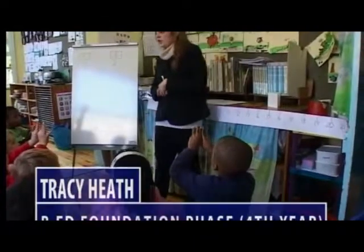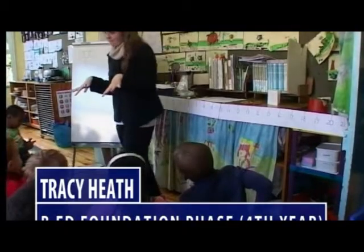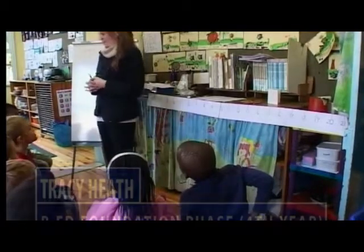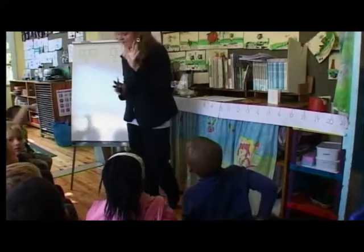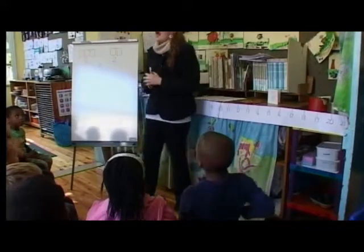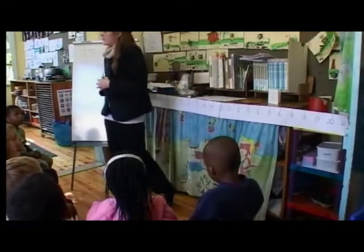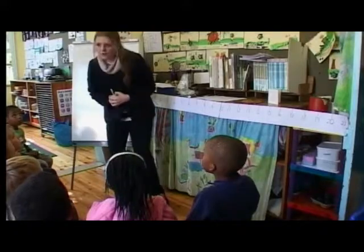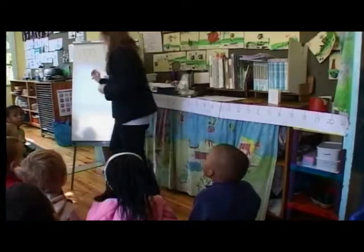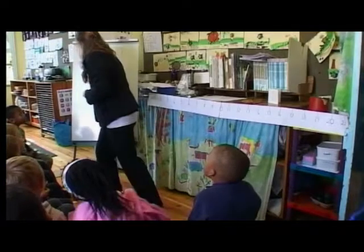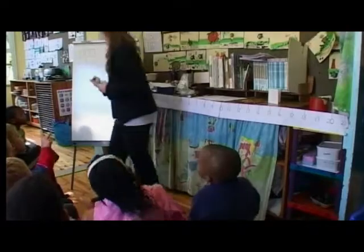Tracy Heath is modeling learner strategies for solving a subtraction problem. She tells a story: 'I have a friend, her name is Jane, and Jane loves apples. She has five apples. And her brother Thomas decides to eat two of her apples. So we're going to draw five apples — these are Jane's five apples.' She asks how many more to make five, and a learner answers: 'Two.' 'Two, good.'